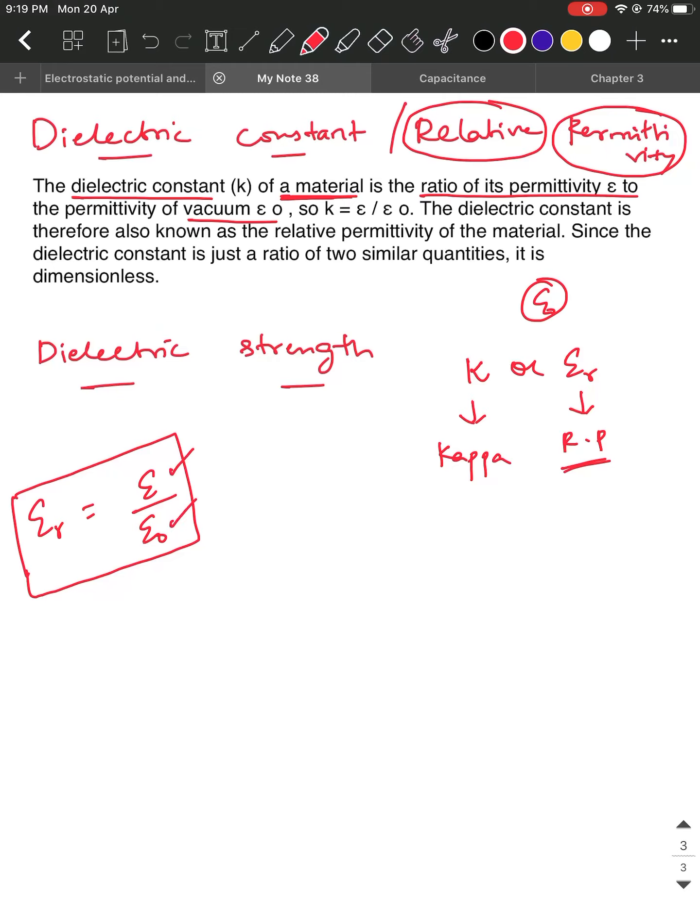Since it is the ratio of the same physical quantity, it is a dimensionless quantity. It does not have any dimension or unit associated with it. So it is just going to be a number.